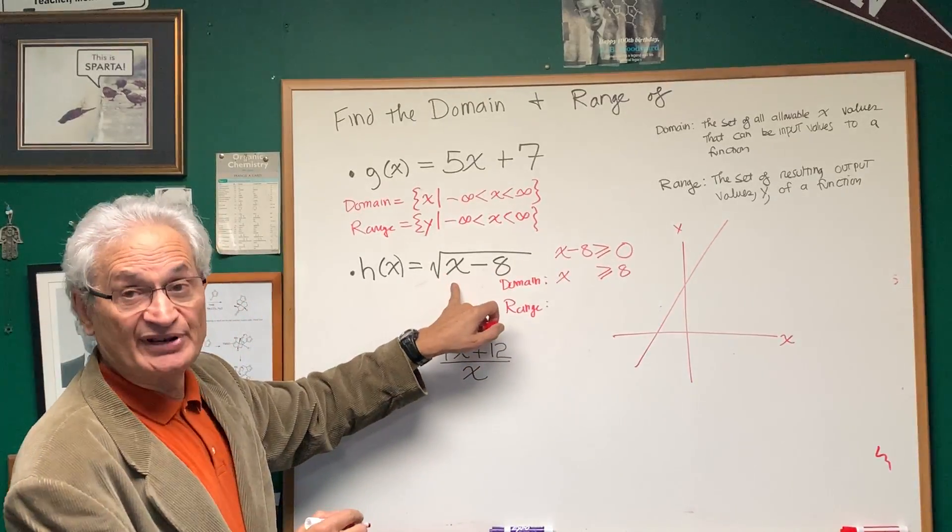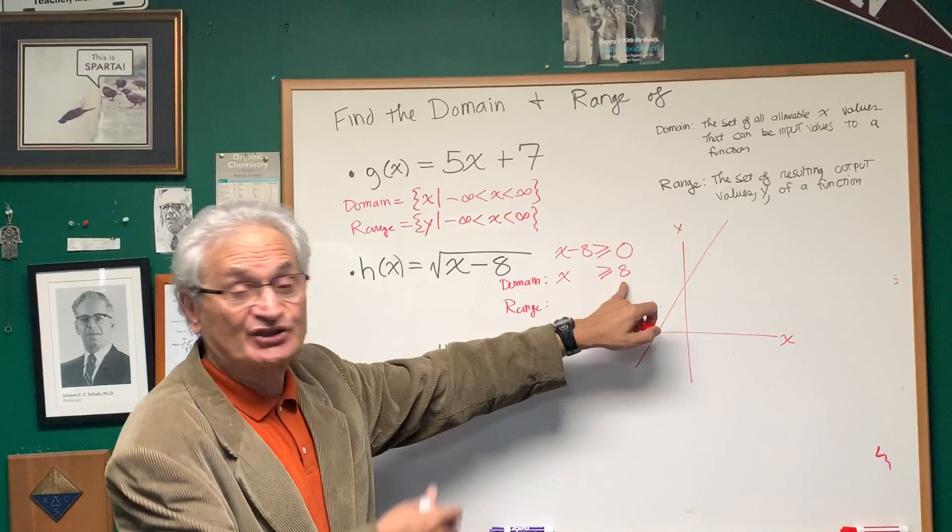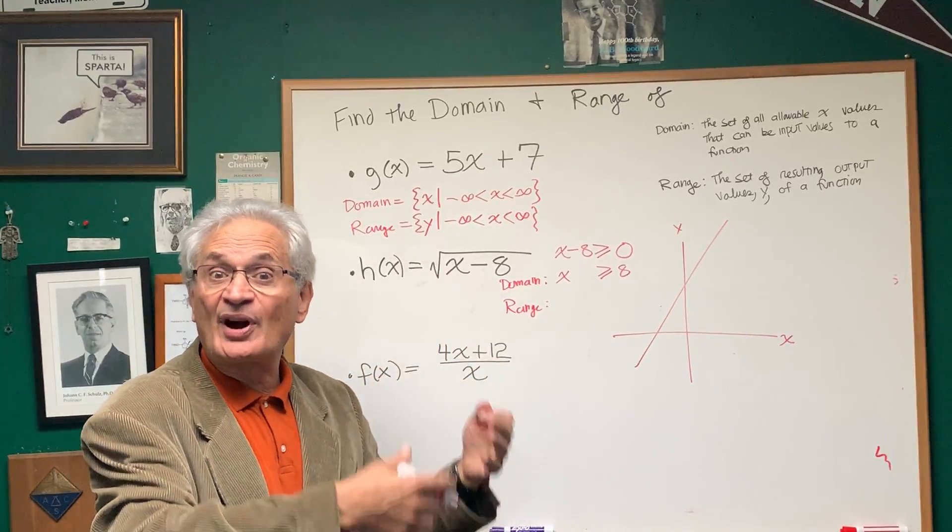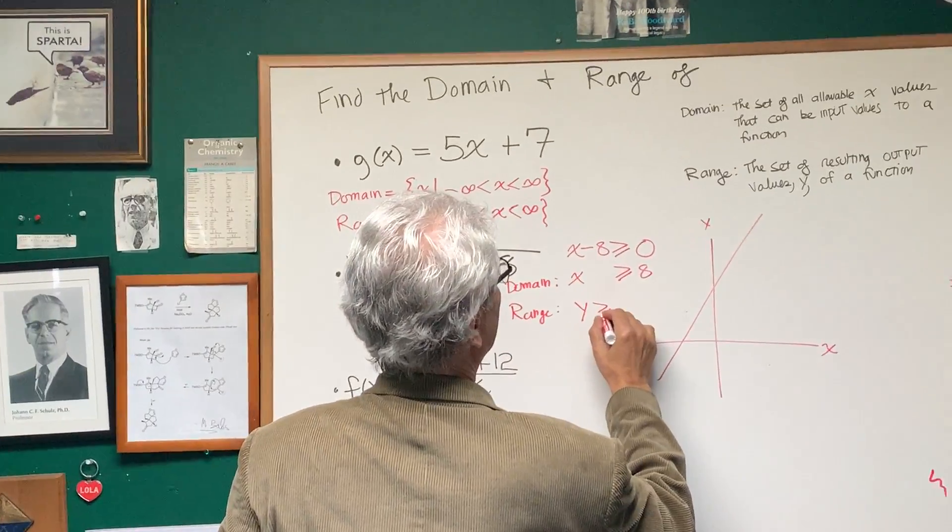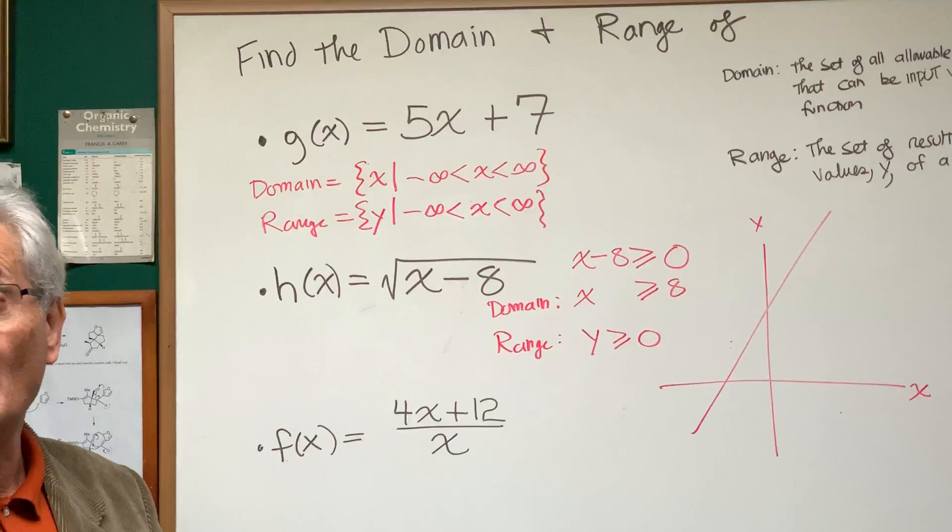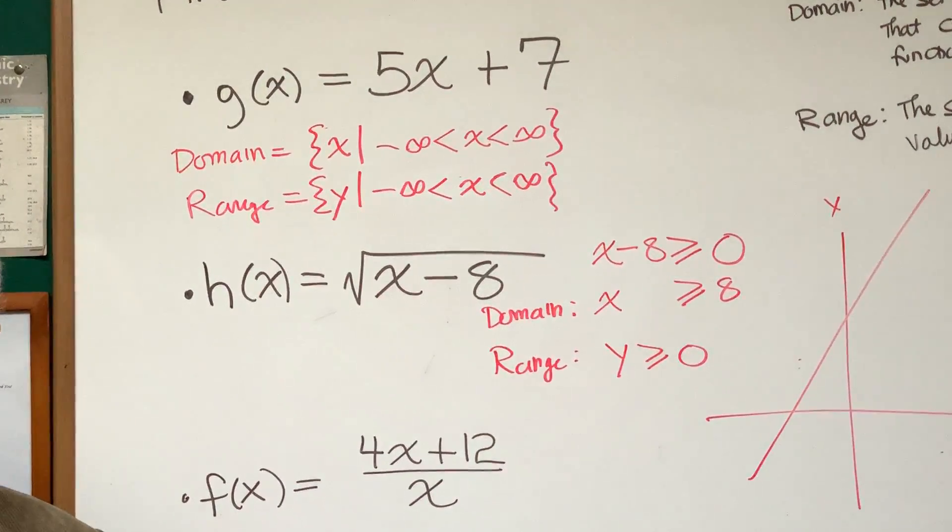So the range here is going to be, well, if x is 8 it's going to be 0, and since the domain is x, all values of x greater than 8, this is going to take on values between 0 and positive infinity. So that means that y is going to be greater than or equal to 0, because of this square root. And there we have the domain and the range of this expression.